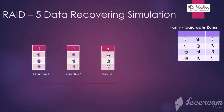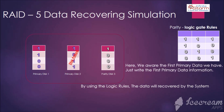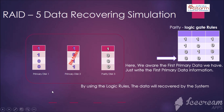Now we are going to see a simulation showing how data is lost and how it is recovered using basic algorithms. For example, primary disk 2 has failed due to some reason. By using basic logic rules, the data will be recovered by the system using the algorithm. Using primary disk 1 data and parity disk 3, apply the logic algorithm to both to retrieve the faulty disk's data.